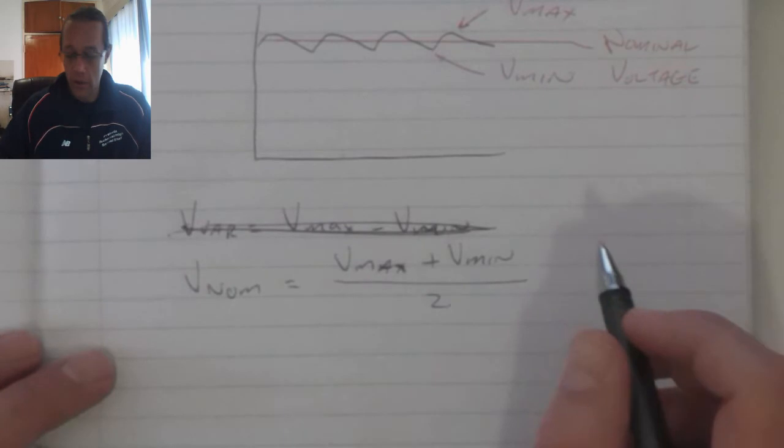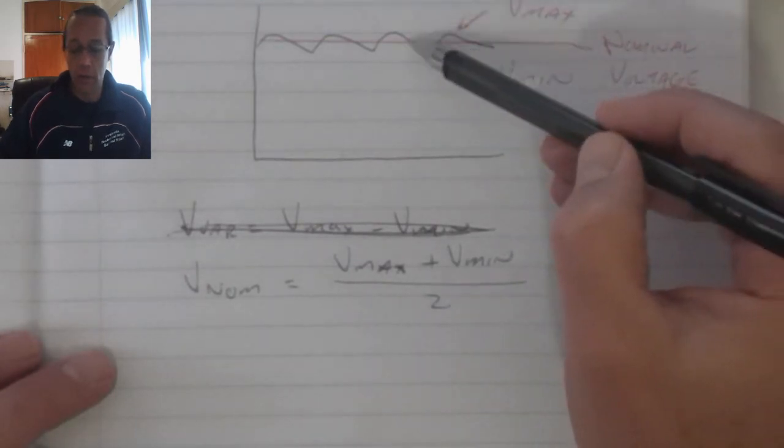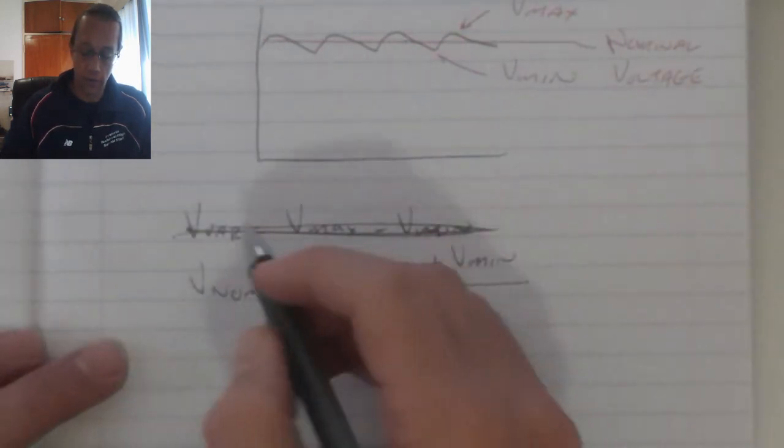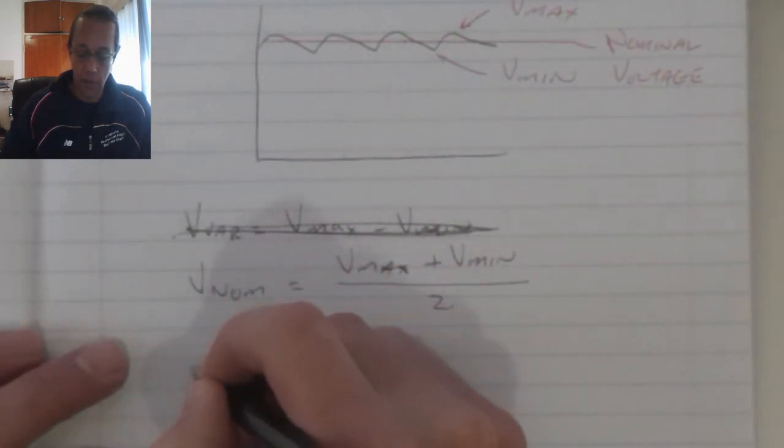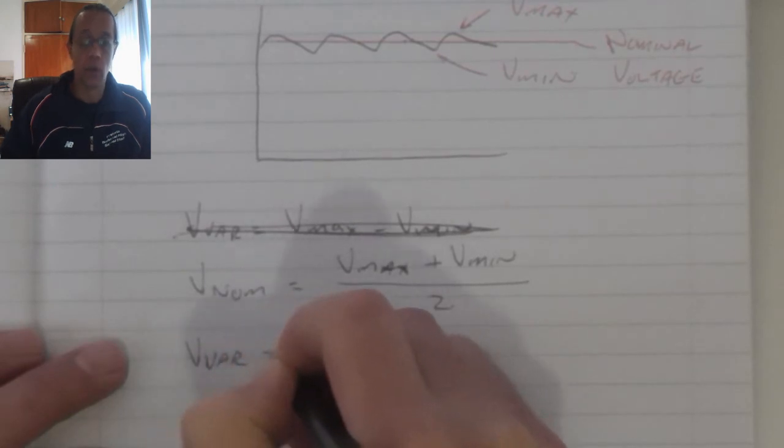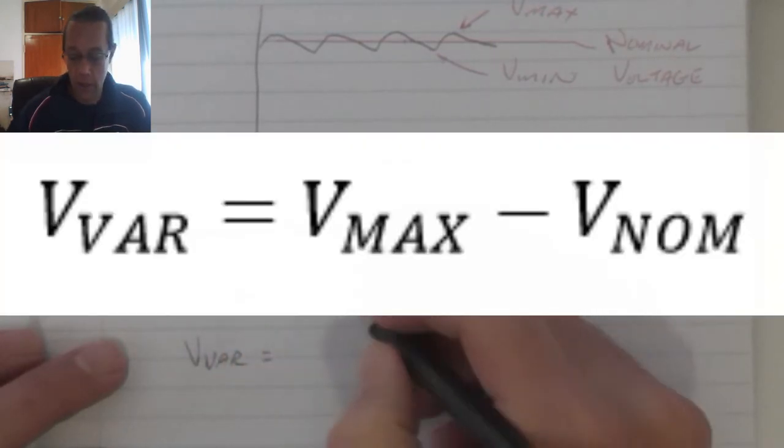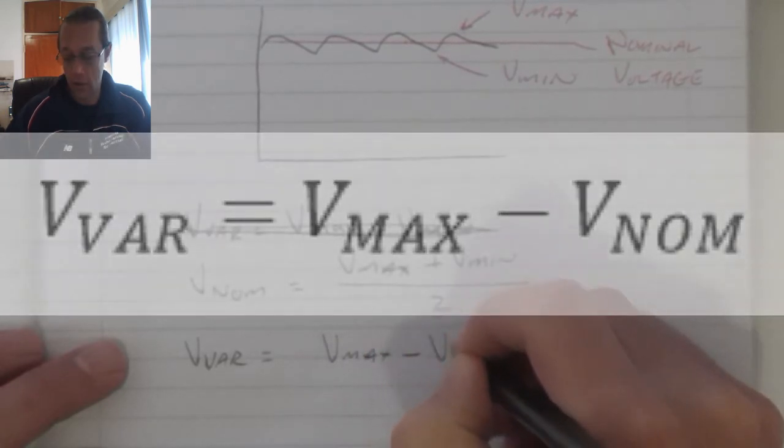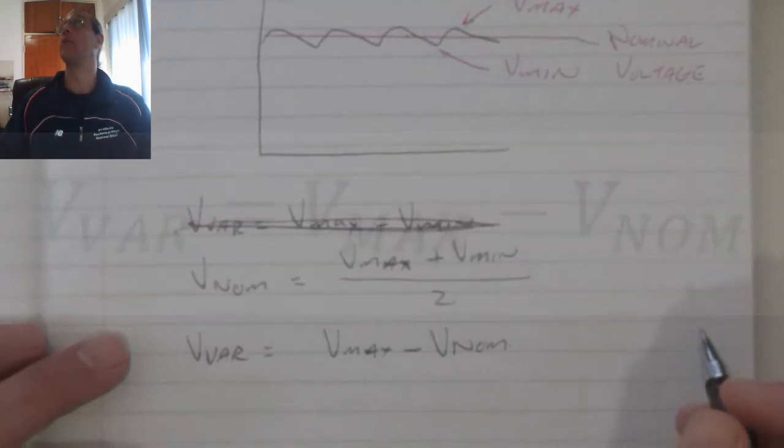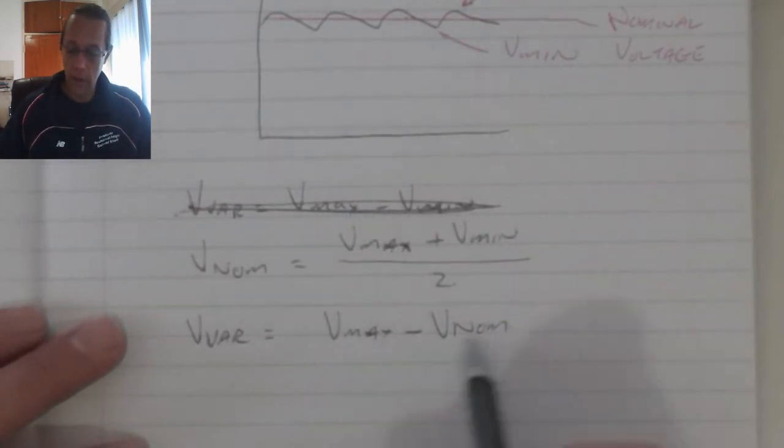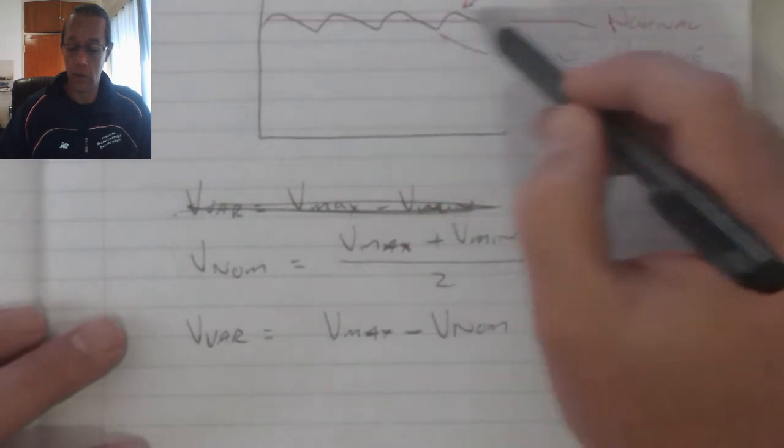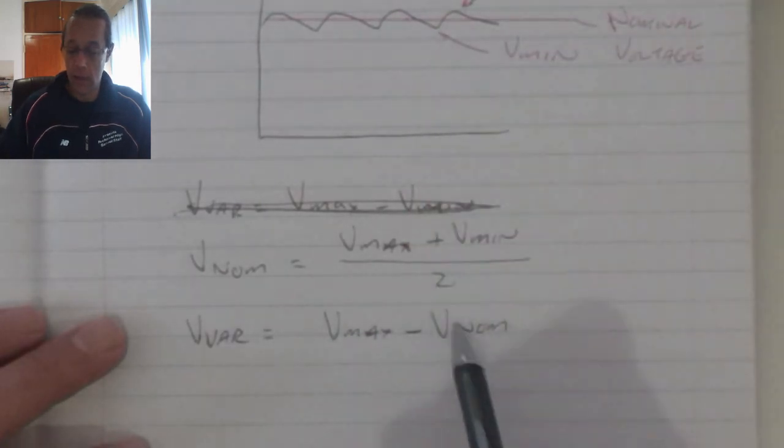The variance refers to the amount that the voltage differs from my nominal value. So to calculate my variance, the variance voltage, I say Vmax minus my nominal voltage. That will now tell me how many volts above and below my nominal value my waveform is represented.